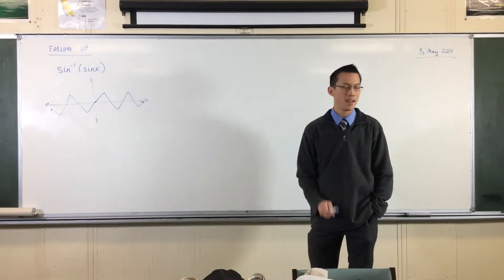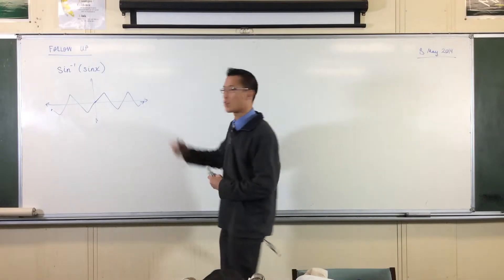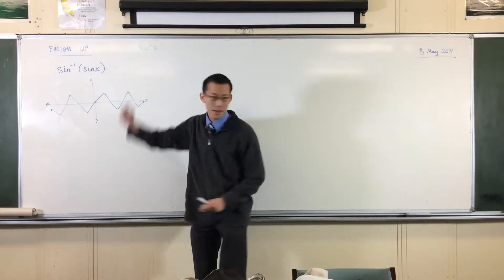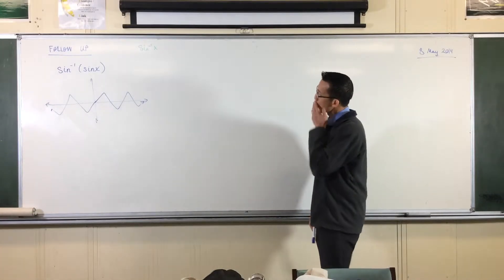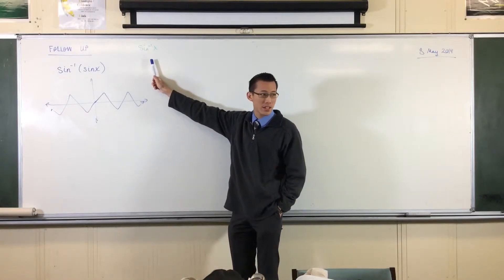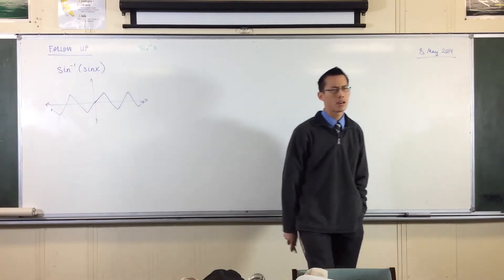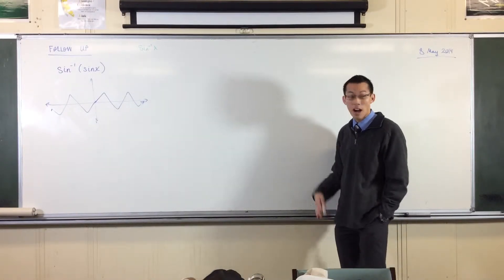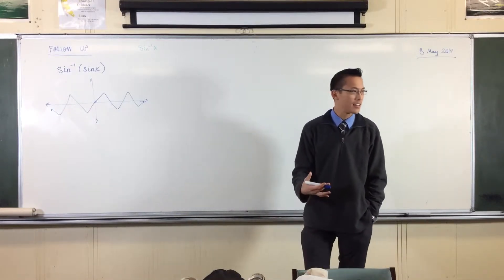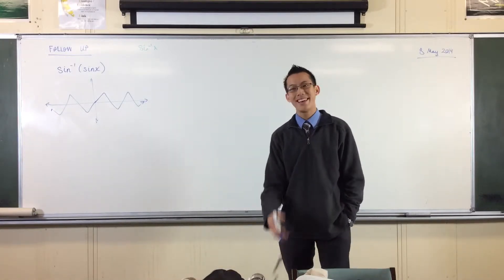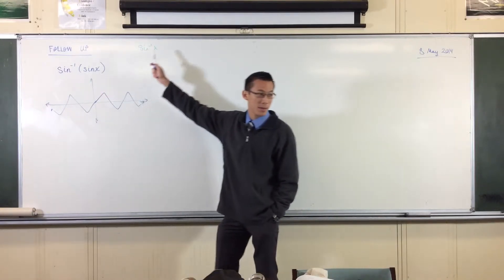One question someone very astutely asked was: hold on a second, sin inverse taken on its own has a restricted domain. It only exists for certain values of x. So how is it that if this thing is restricted, this whole thing is not restricted? Because as you see, it goes forever.